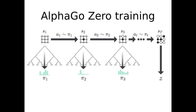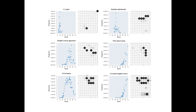Here we are using epsilon-greedy exploration, which means we randomly choose actions with a lower probability. In the case of AlphaGo Zero we actually choose 1000 actions per state.